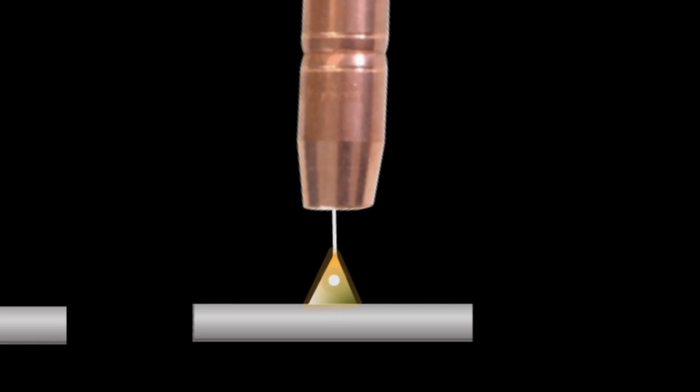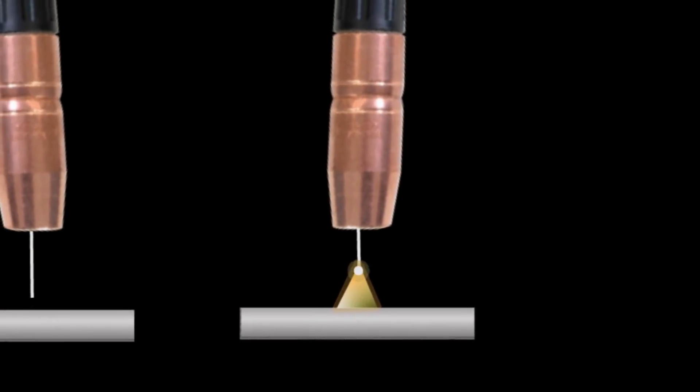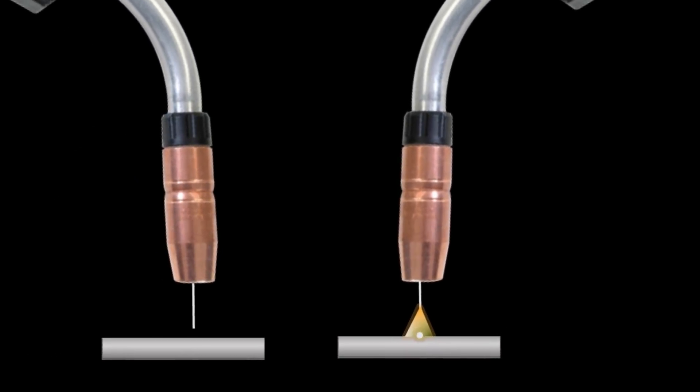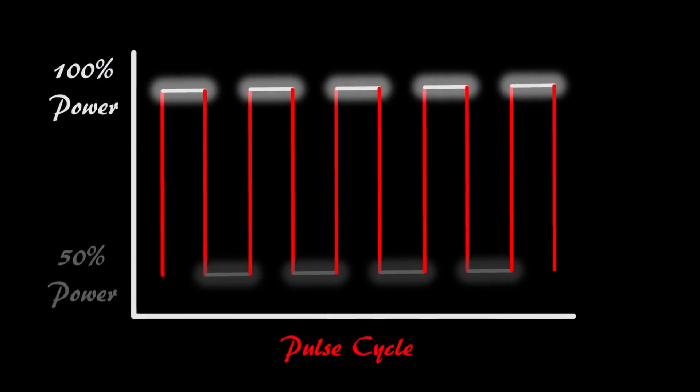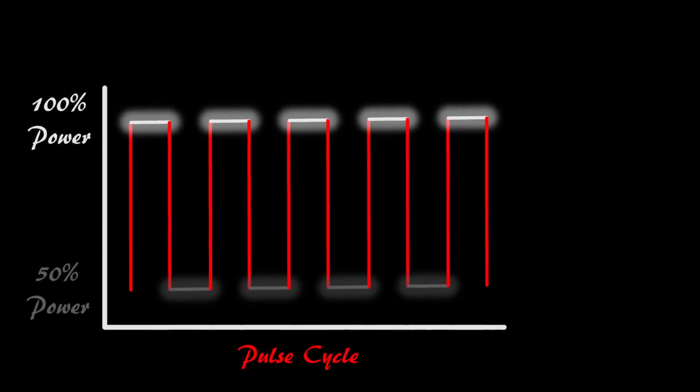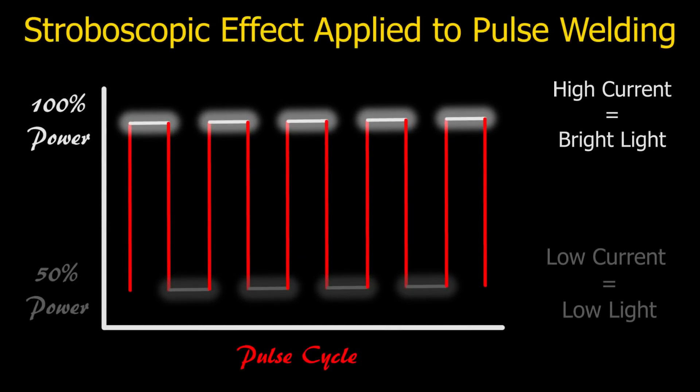Now spray transfer, you normally can't actually see it with the naked eye because it's happening so rapidly. But what's unique about this one is on the Pro Pulse 200, the high side of the pulse basically makes a bright light and the low side of the pulse or the background current makes a darker light, essentially turning the arc into a bit of a strobe light.